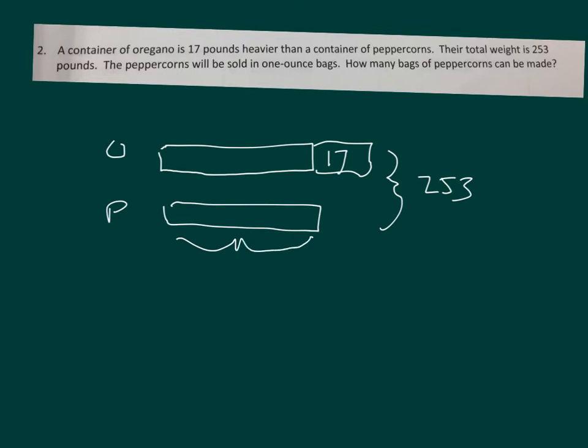We want to know the weight of the peppercorns so that we can figure out how many bags of peppercorns can be made. So let's start out with 253 minus 17, and that'll be worth our two units. One unit, two units. 253 minus 17 is equal to 236. So two units equals 236. So that's half of that. Half of it is, how much? Right, 118.